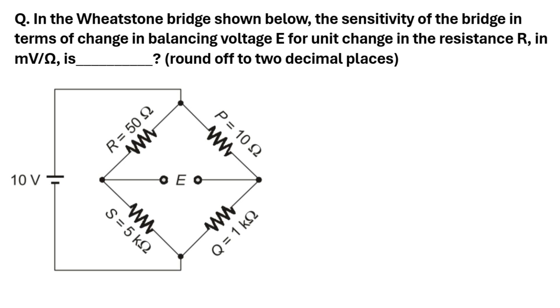In the Wheatstone bridge shown below, we need to find out the sensitivity of the bridge in terms of change in balancing voltage E for unit change in the resistor R in terms of millivolt per ohm.